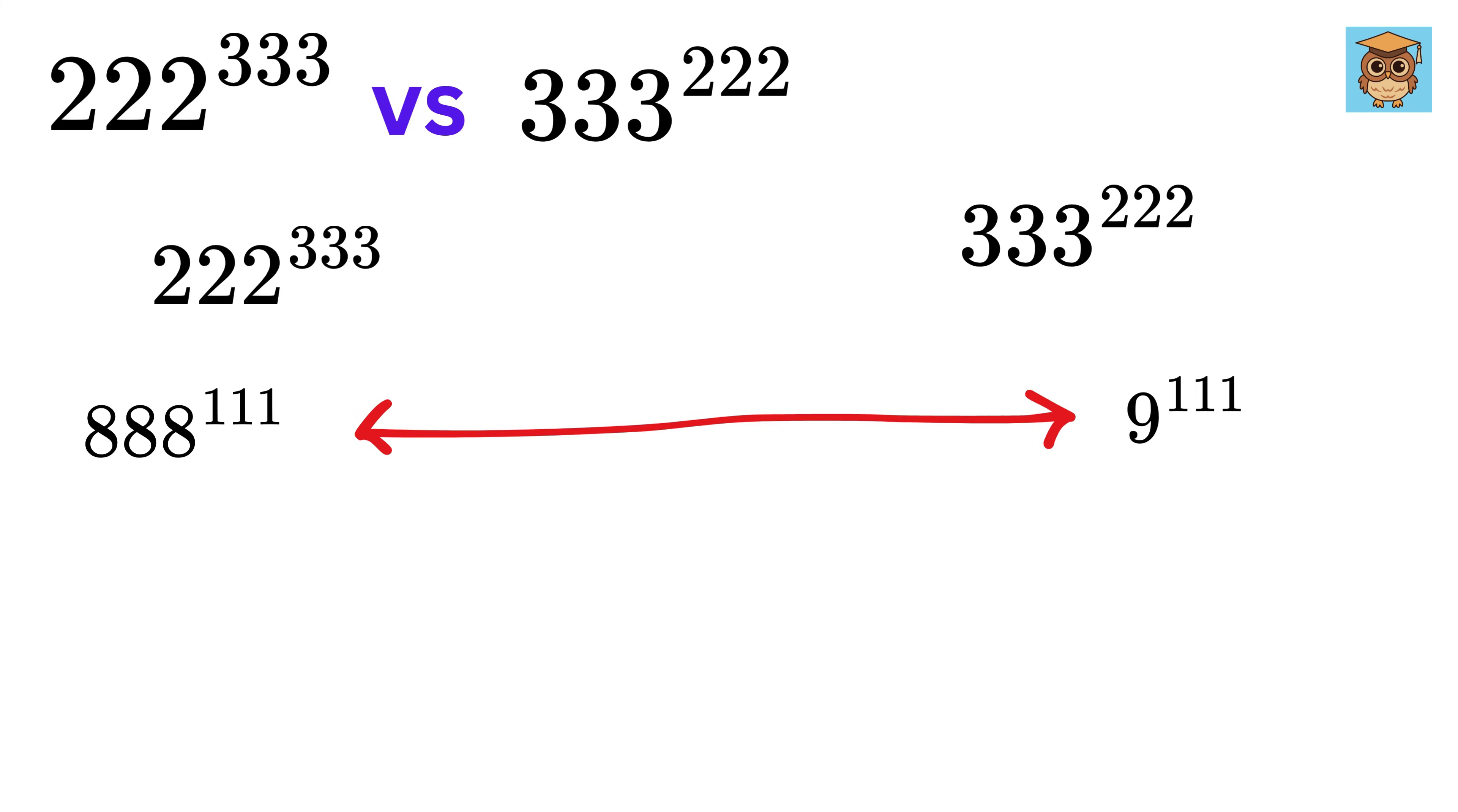Now we only have to compare both of them, which is super easy because both of them have the same power. And thus, clearly, 888 is way greater than 9, which means the left side or 222 raised to 333 is way greater than 333 raised to 222.